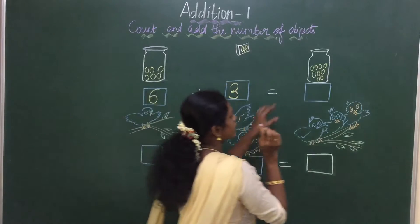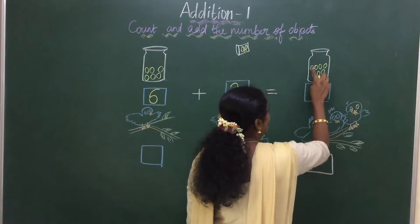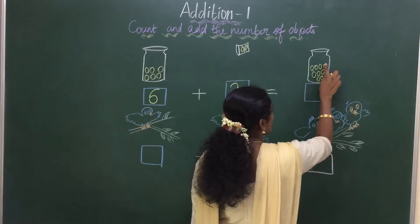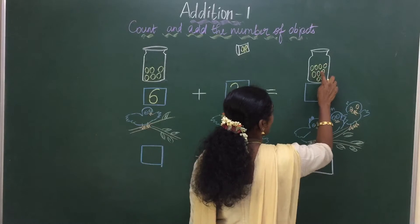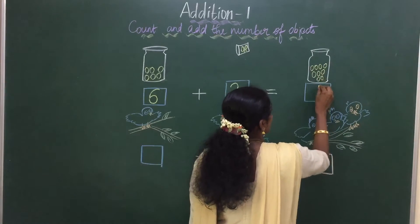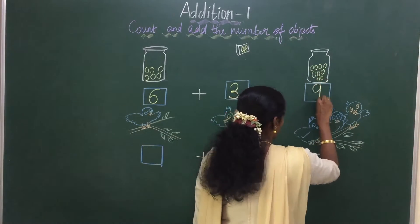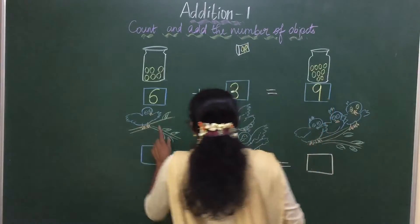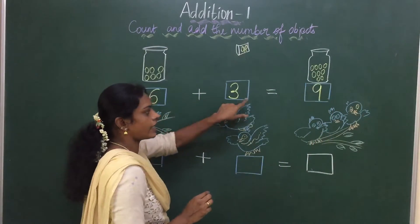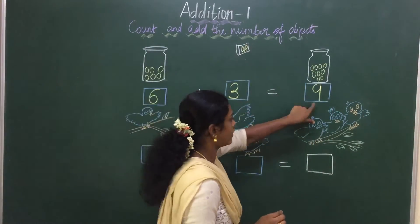Now let us count in the jar: 1, 2, 3, 4, 5, 6, 7, 8, 9. So how many marbles are there? 9. So see, 6 plus 3 is equal to 9.